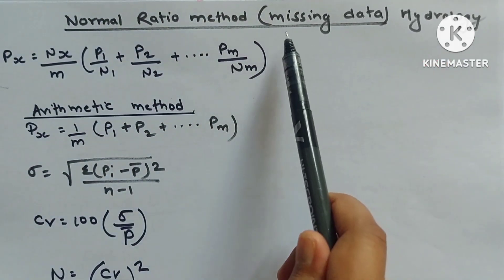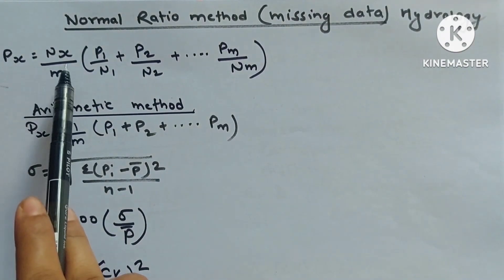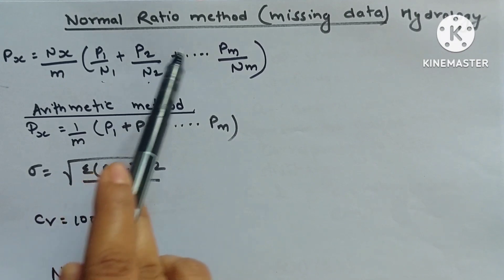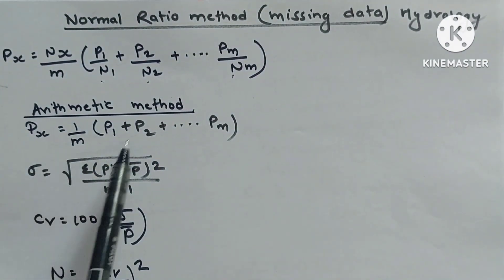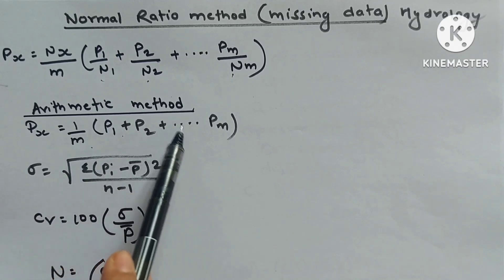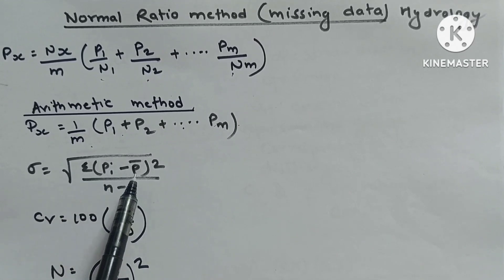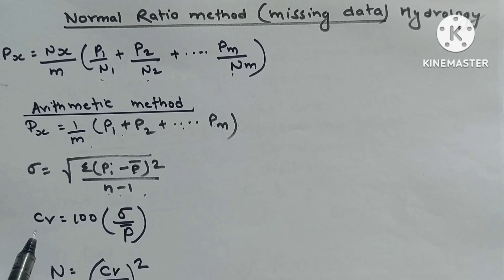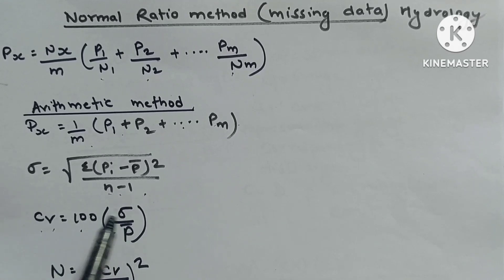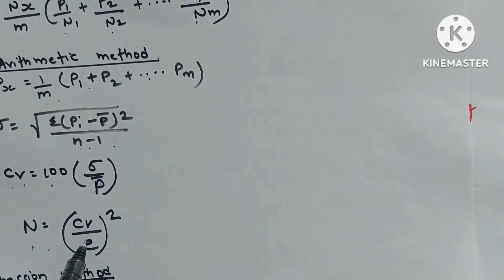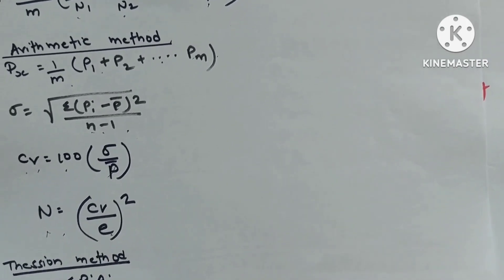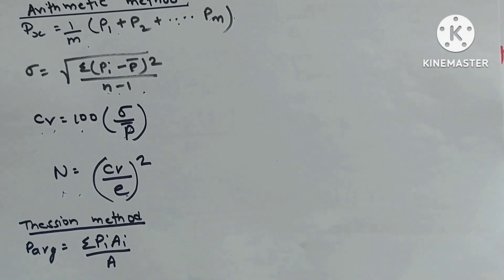Missing rainfall data — Normal Ratio Method: Px = (Nx/m)(P1/N1 + P2/N2 + ... + Pm/Nm). Arithmetic mean method: Px = (1/m)(P1 + P2 + ... + Pm). Standard deviation σ = √(Σ(Pi − P̄)²/(n − 1)). Coefficient of variation CB = 100σ/P̄. n = (CB/E)². Thiessen method: P_avg = ΣPi·Ai/A.